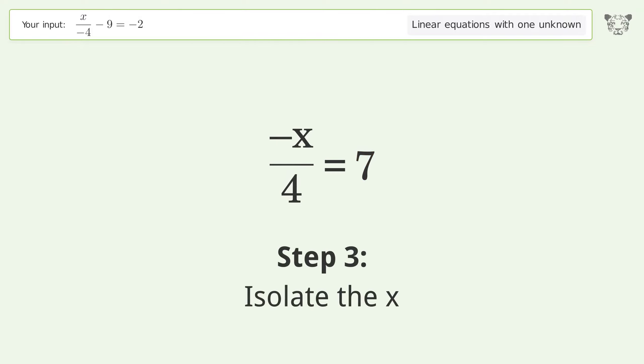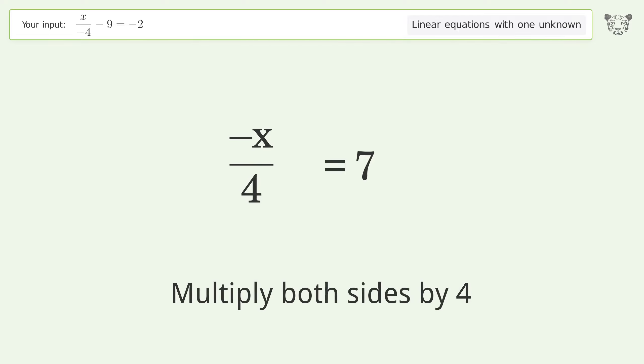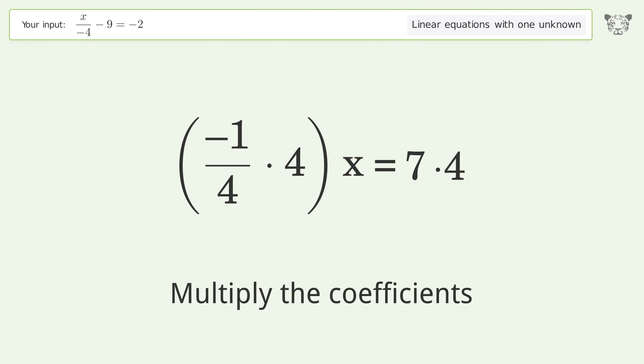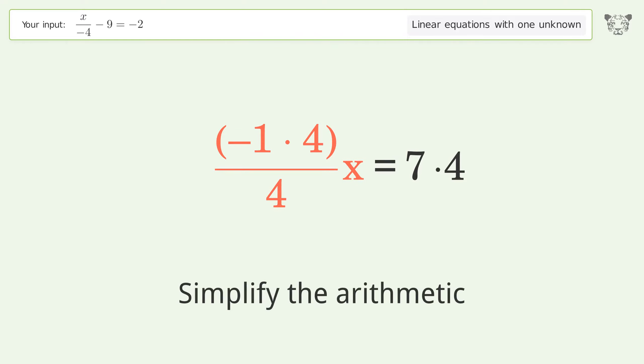Isolate the x. Multiply both sides by 4. Group like terms. Multiply the coefficients. Simplify the arithmetic.